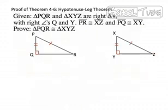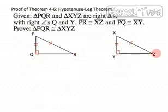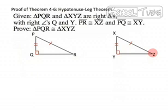So let's take a minute and try to prove this. Given that triangle PQR and triangle XYZ are right triangles with right angles Q and Y, segment PR is congruent to segment XZ, and segment PQ is congruent to segment XY, we need to prove that these two triangles are congruent. The first thing we need to do is draw ray ZY and mark a point S so that the distance from Y to S equals the distance from Q to R.